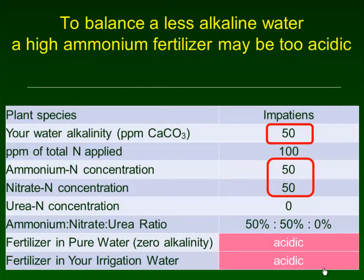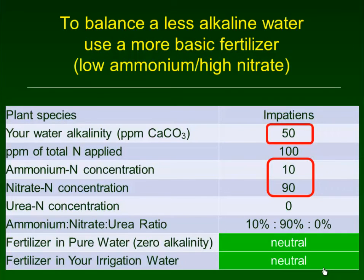If we have an irrigation water that has low alkalinity and we still keep a very acidic fertilizer, then we're going to have an imbalance. With less alkaline water we need to change the ratio between ammonium and nitrate. With a 50/50 split it's going to have an acidic overall effect. But if we drop the ammonium nitrogen down to 10% and increase nitrate up to 90%, now we have a neutral reaction with our low alkalinity water.